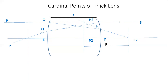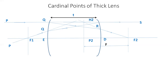F1 is the first focal point. At the first focal point, draw a plane passing through F1 and perpendicular to the principal axis — this is called the first focal plane. Extrapolate RS in the backward direction and PQ in the forward direction; they meet at point H1. At point H1, draw the plane perpendicular to the principal axis, which meets the principal axis at point P1.